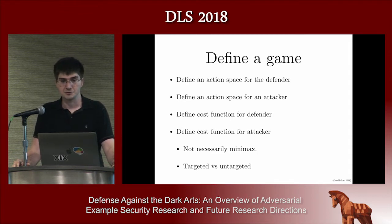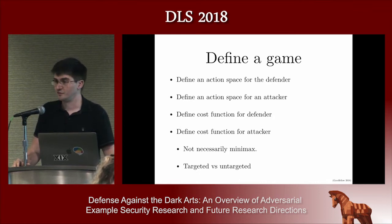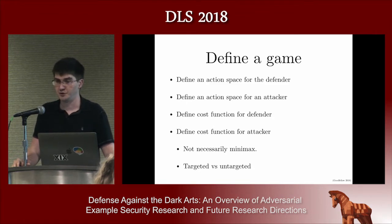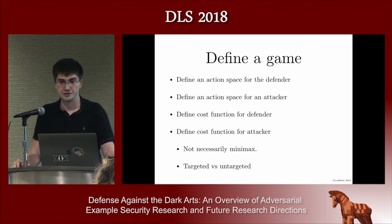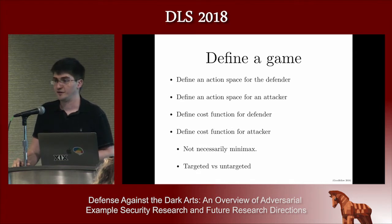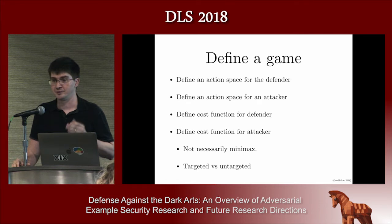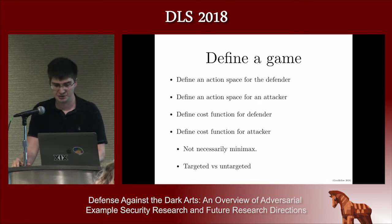These games are not necessarily minimax — we should specify a different cost for the defender and the attacker. A lot of the time, the cost function for the defender is the number of mistakes they make, but the attacker's cost function might not be just the negation of that. For example, the attacker might want to cause the model to make specific mistakes — like getting into a secure facility by having your face misrecognized as someone who has access.